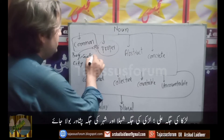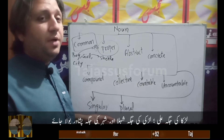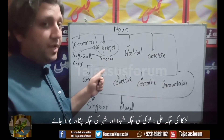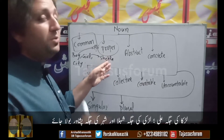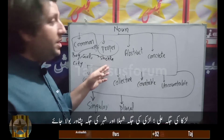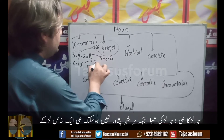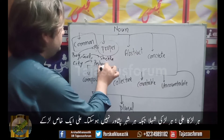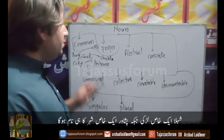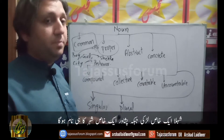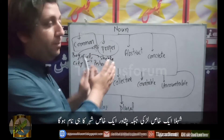Similarly, if I say Shehla — surely each and every girl can't be Shehla. Shehla refers to a specific girl, so Shehla is a proper noun. Now if I say Peshawar — each and every city cannot be Peshawar. Peshawar is the name of a specific place, so Peshawar is a proper noun. This was the difference between a common and a proper noun.